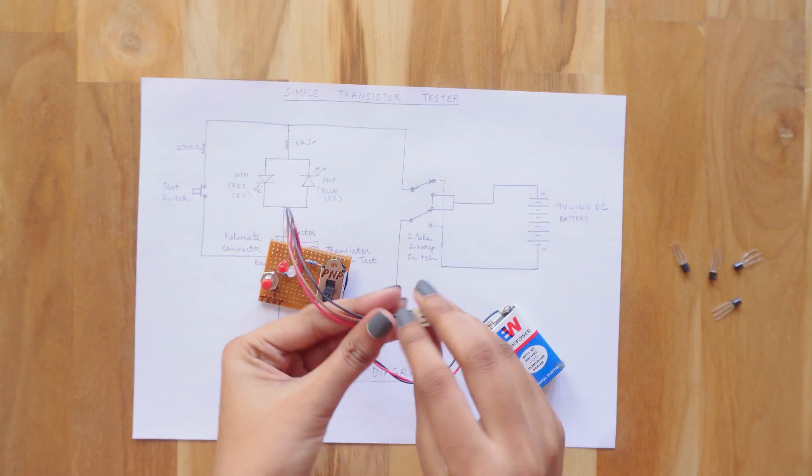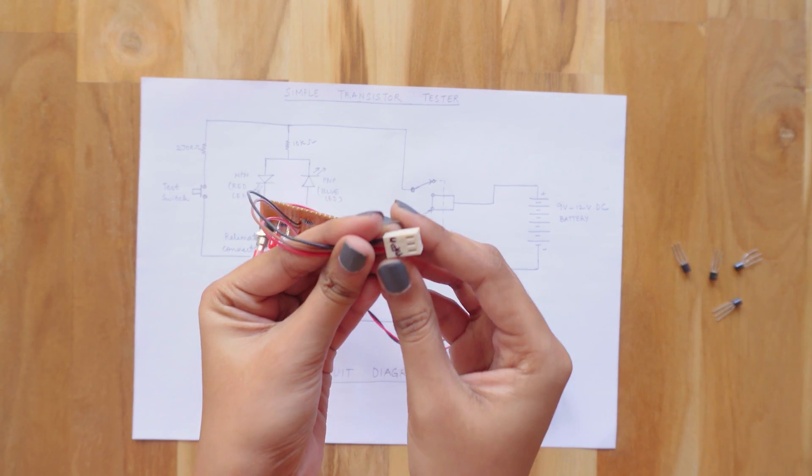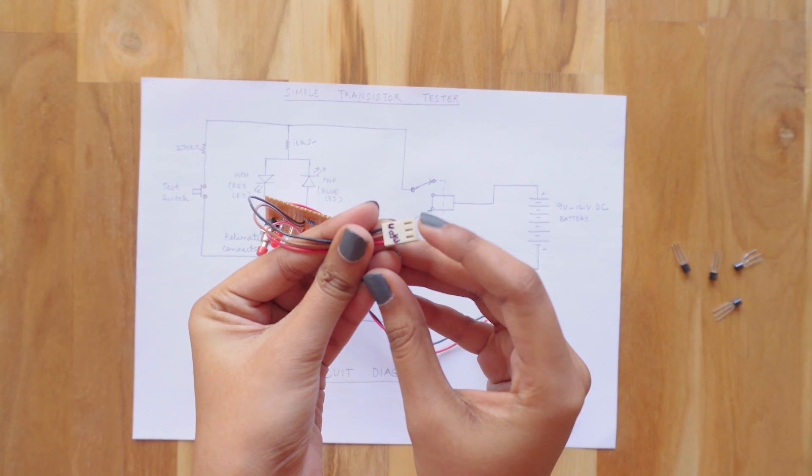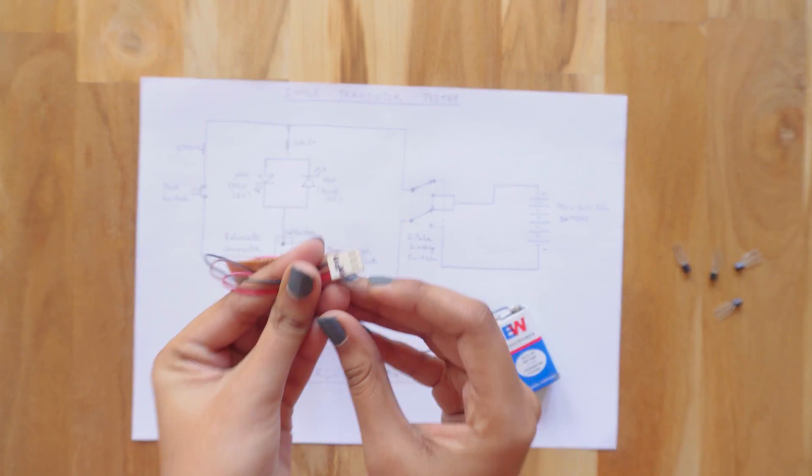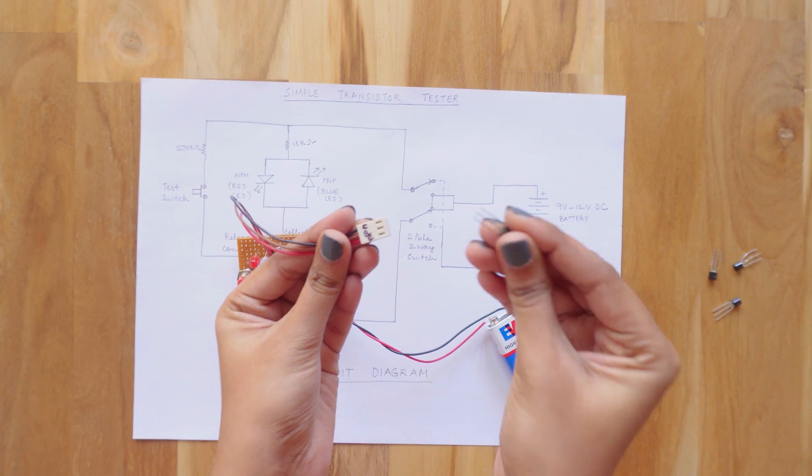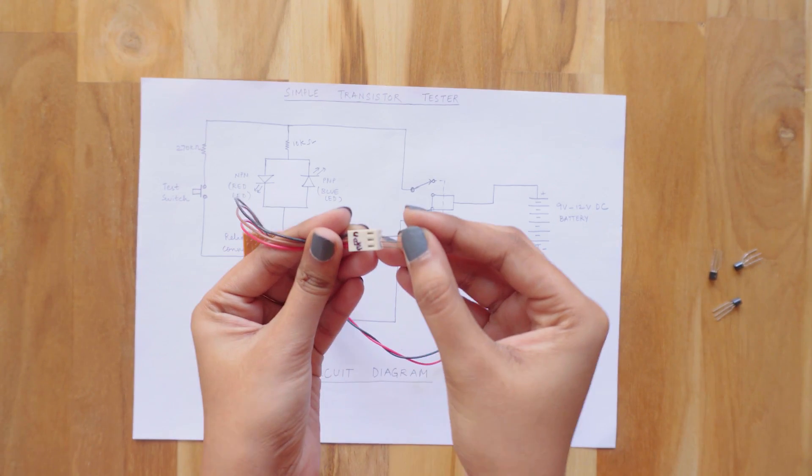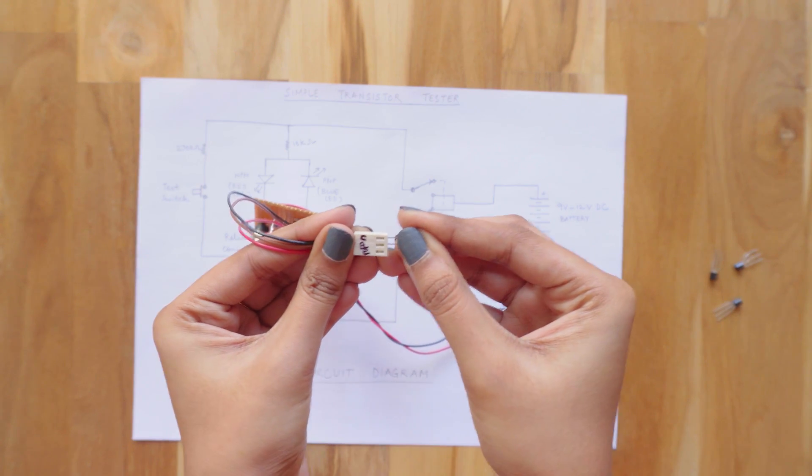Now let's see how the circuit works. This is the relimate connector which I have used to place the transistor in it. And you can clearly see here that I have marked Collector, Base and Emitter on it so that it will be very easy for you to insert the transistor with the correct pin configuration.